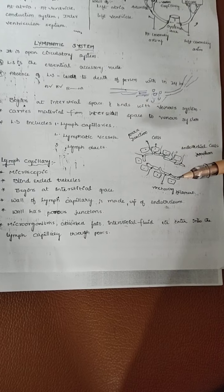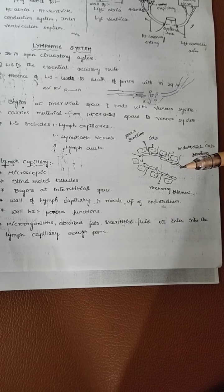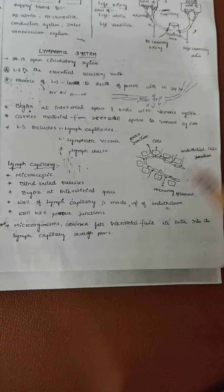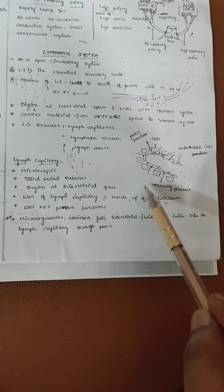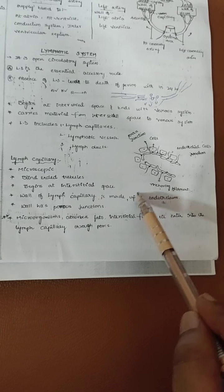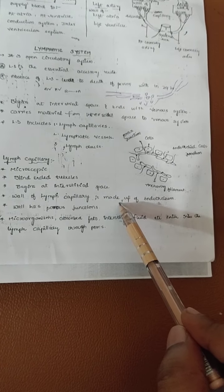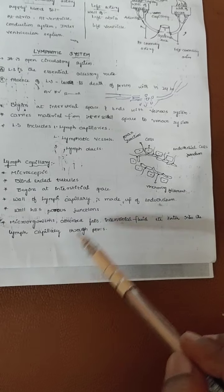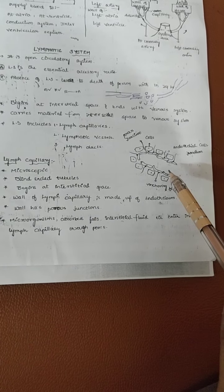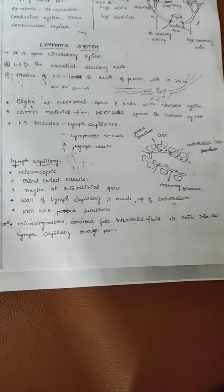In the physiology of digestion, the chylomicrons enter into the lymphatic vessels. Through this, fats and microorganisms are absorbed. The microorganisms are destroyed by the presence of white blood cells, and the fats are absorbed and then enter into the blood capillaries.